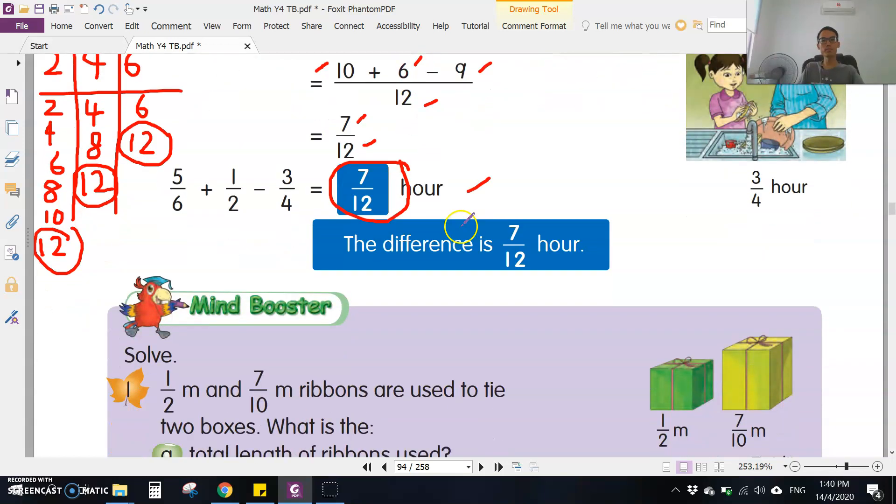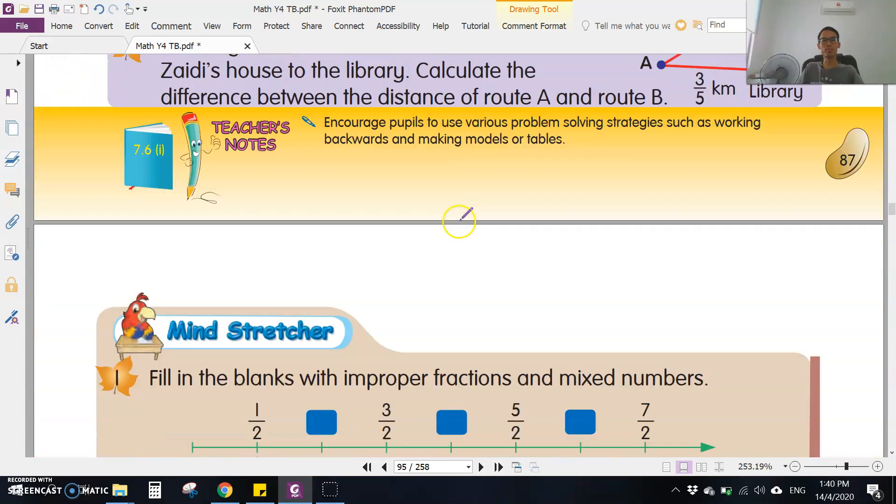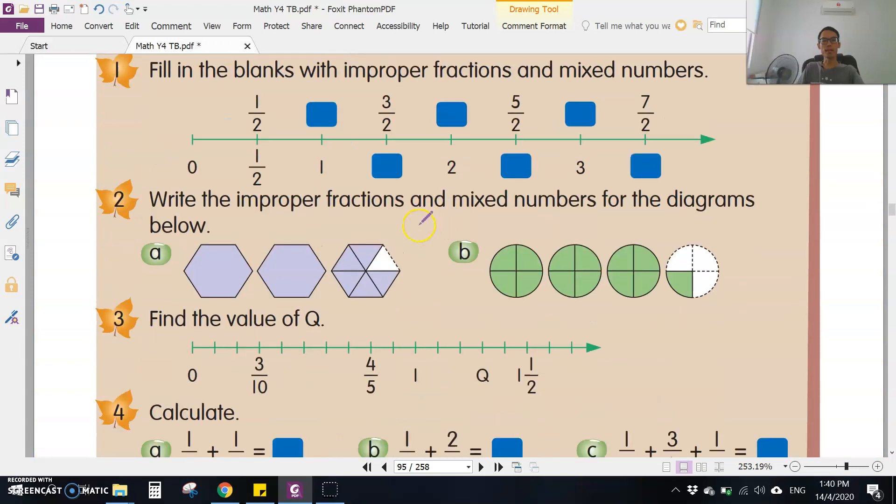Now look at question 2a. Write the improper fractions and mixed numbers for the diagrams below. This is a hexagon - one, two, three, four, five, six sides. This is one, this is another one.